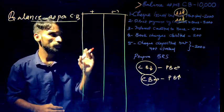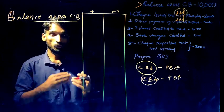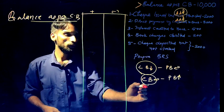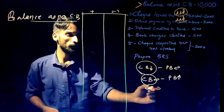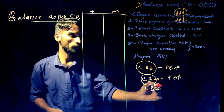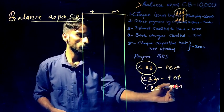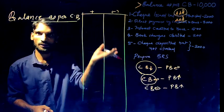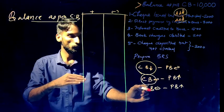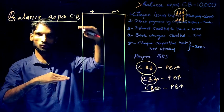Transaction three: interest credited to bank. The bank credits interest to the account. We have to update the Cash Book. The bank has a balance from this interest credit, so we add it back on the Pass Book side.